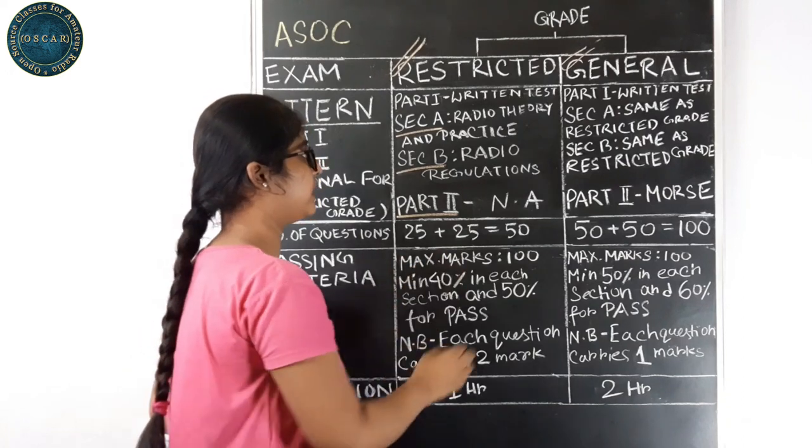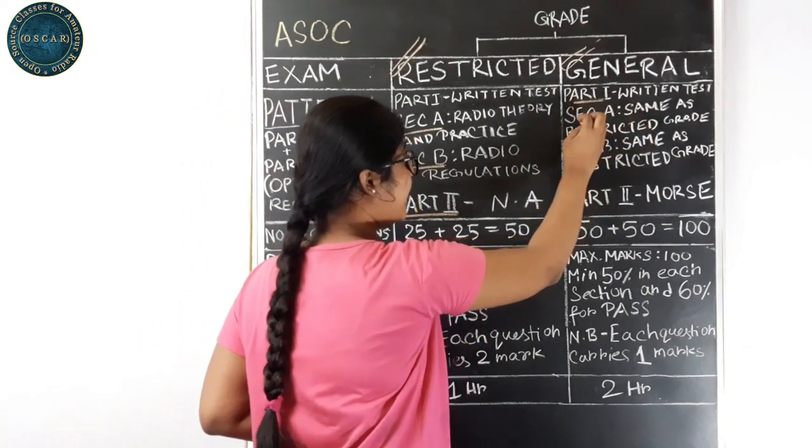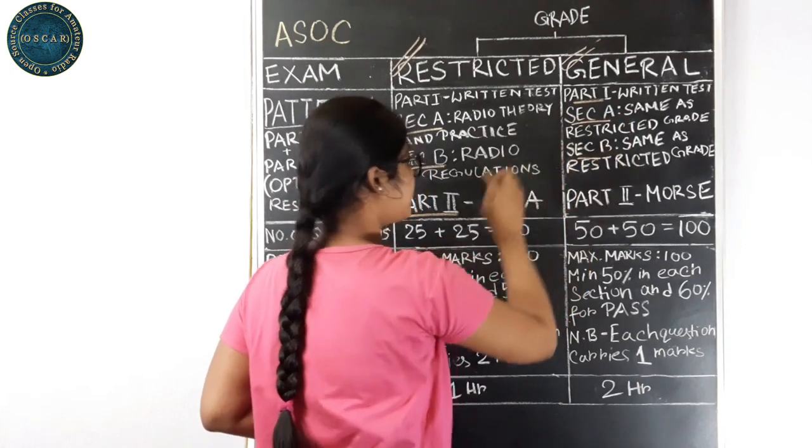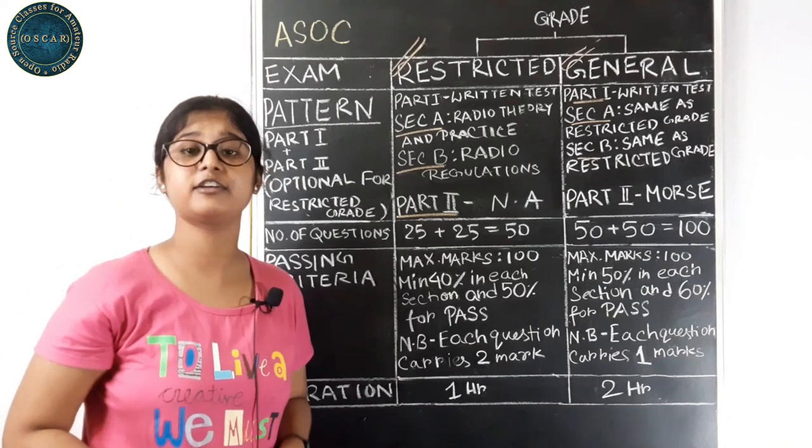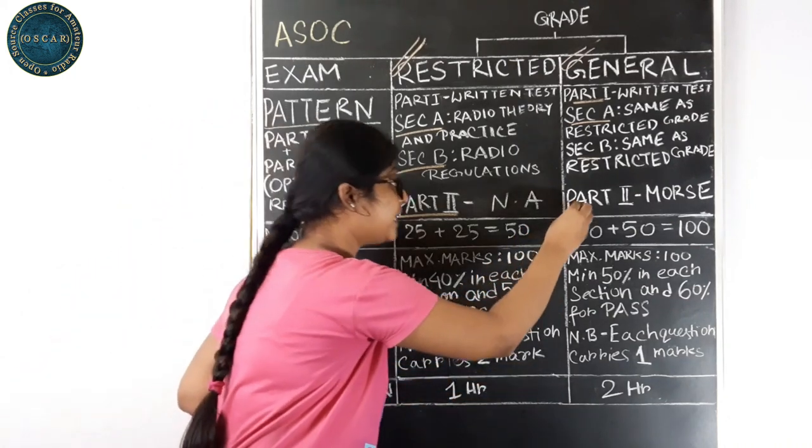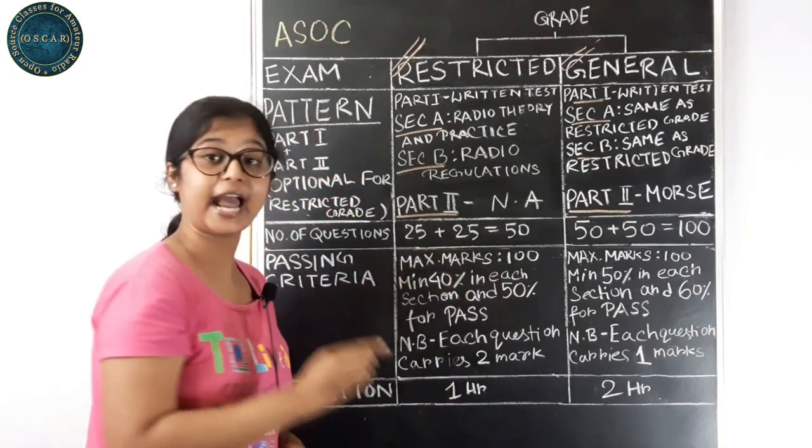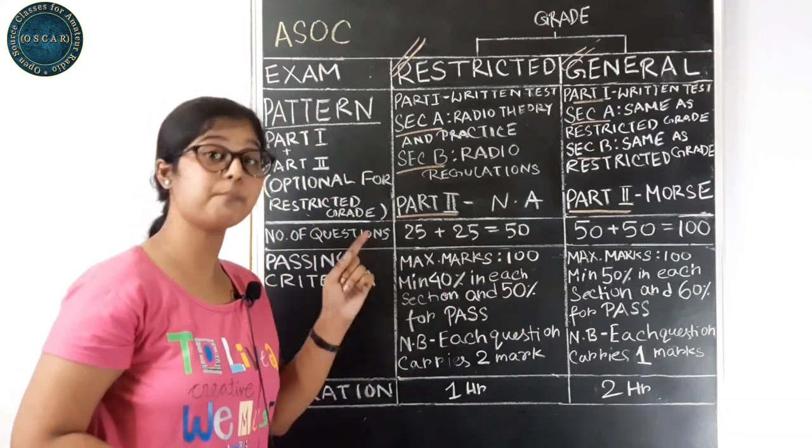Coming to General Grade, part 1 is the written test and it is same as Restricted Grade. The syllabus for both the grades is almost same but there are a few things that are different. But in General Grade, you have to play and decode Morse. That is mandatory.